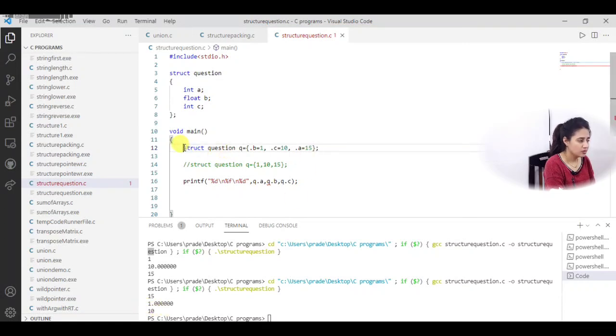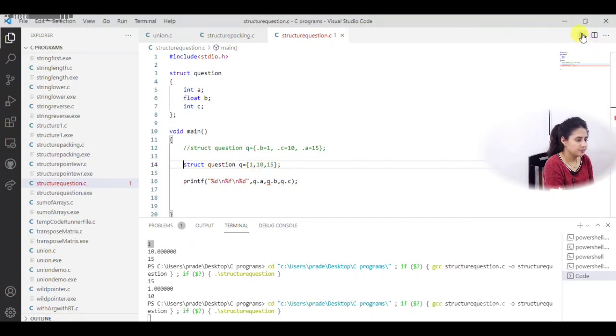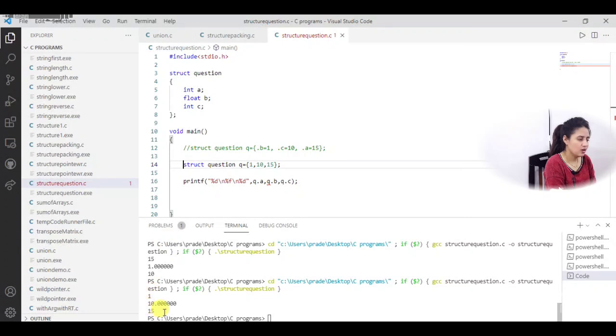But we are not doing this one. I am initializing it a simple way that this is the way. Right. Struct question Q. Only we are writing the values 1, 10, 15. Right. Now, see what output you will get. It is now 1, 10 and 15. Right. I hope now you can see the difference between these two initialization of the structure members.